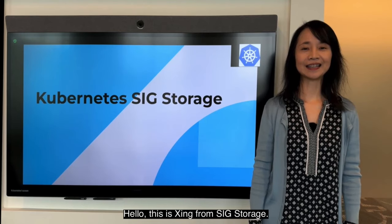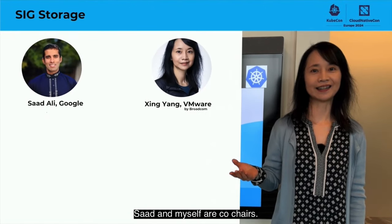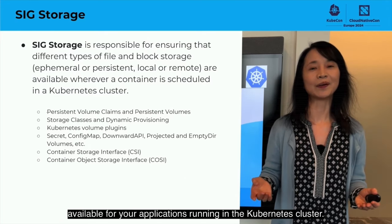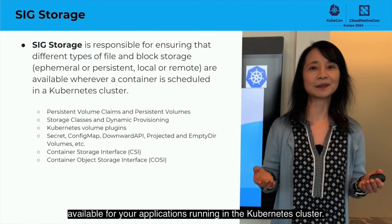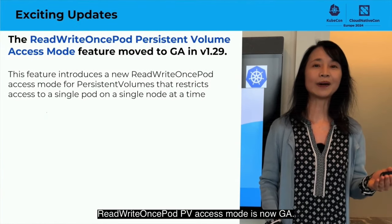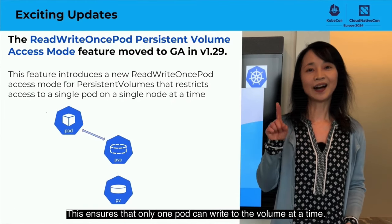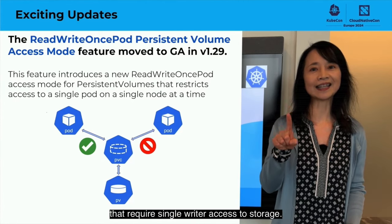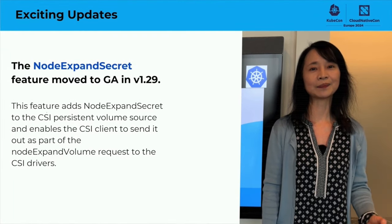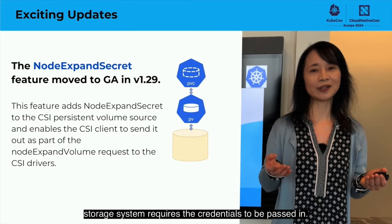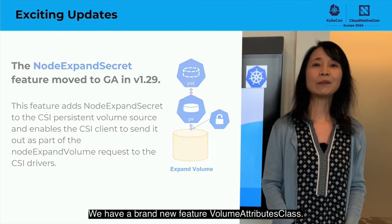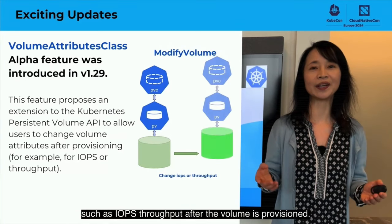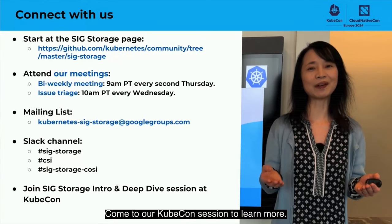Hello everyone. This is Xing from SIG Storage. Saad and myself are co-chairs, and Michelle and Yang are tech leads. SIG Storage ensures that persistent volumes or ephemeral volumes are available for your applications running in the Kubernetes cluster. ReadWriteOncePod PV access mode is now GA — this ensures that only one pod can write to the volume at a time, and can be very useful for stable workloads that require single-writer access to storage. NodeExpandSecret is now GA, enabling volume expansion on the node where the underlying storage system requires credentials to be passed in. We have a brand new feature, Volume Attributes Class — in addition to resize, you can now also modify other attributes such as IOPS throughput after the volume is provisioned. Come to our KubeCon session to learn more. Thank you.